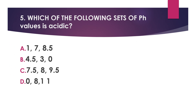Number five: Which of the following sets of pH values is acidic? A) 1, 7, 8.5, B) 4, 4.5, 3, and 0, C) 7.5, 8, or 9.5, D) 0, 8, and 11.